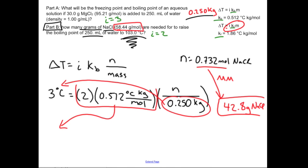In summary, the equations associated with colligative properties — at least these freezing point and boiling point changes — are pretty straightforward. You just have to keep track of what each value is, what units it's measured in, how to find the constants, and what the van't Hoff factor is. Keeping track of those things will get you to the right place.